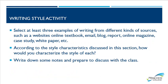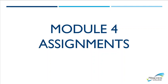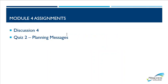Here's another activity you can do on your own — you don't have to turn this in. Select at least three examples of writing from different kinds of sources, such as a website, online textbook, email, blog, report, online magazine, case study, or white paper. According to the style characteristics discussed in this section, how would you characterize the style of each one? Module four assignments include discussion four and your second quiz, which is on planning messages.